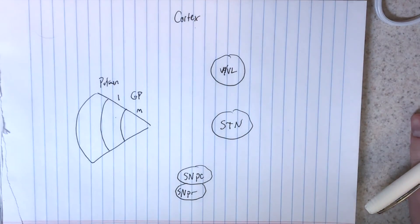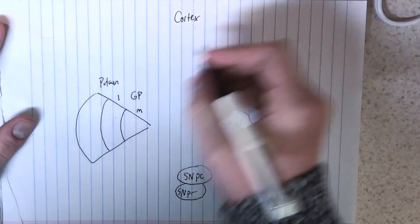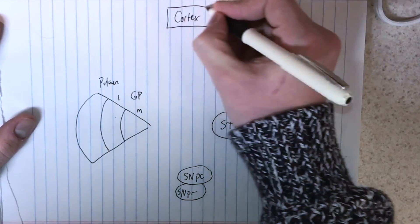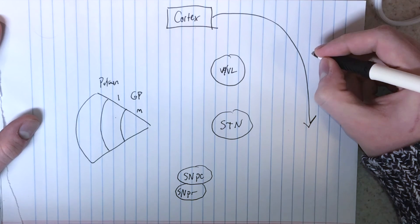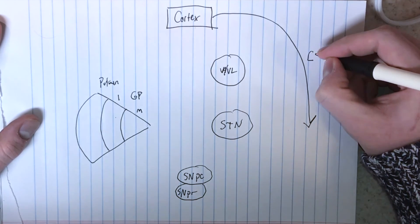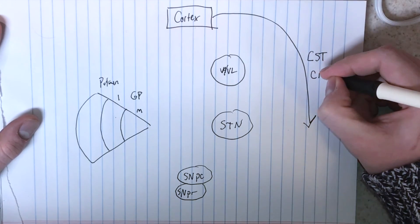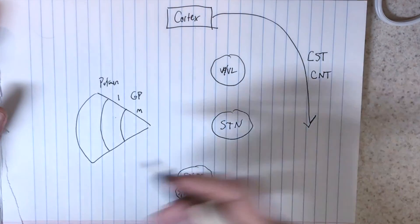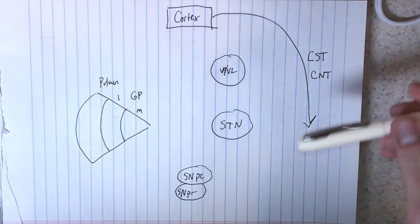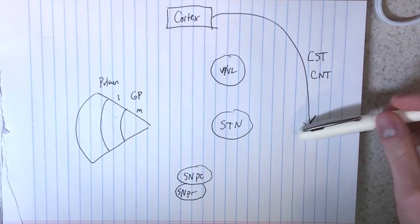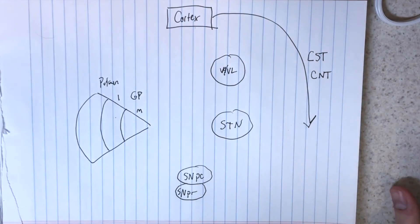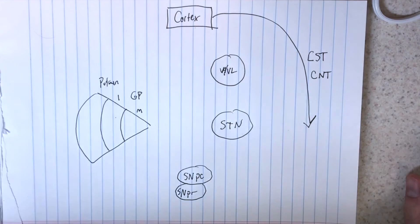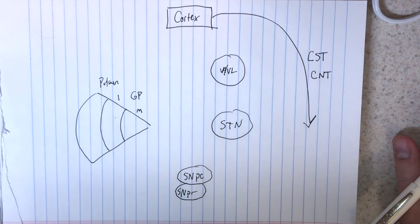I kind of just imagine this diagram in my head every time I think about these two dopaminergic pathways just to keep it straight. Coming out of the cortex we have an excitatory corticospinal tract and corticonuclear tract. By convention, excitatory pathways are a regular arrow, and inhibitory pathways have a blunted edge.